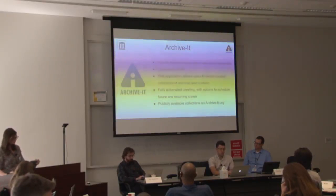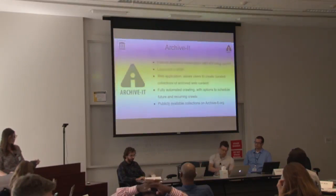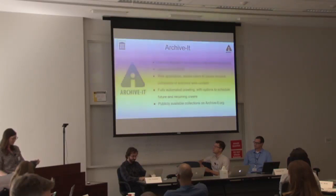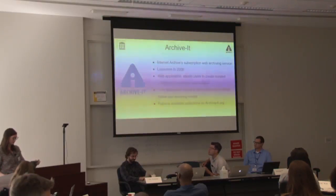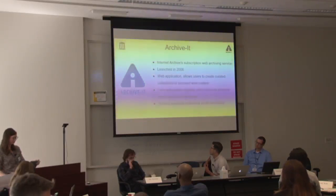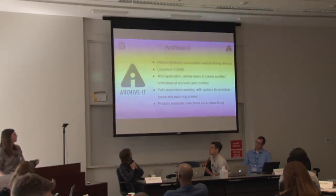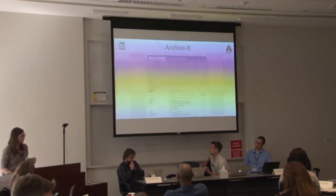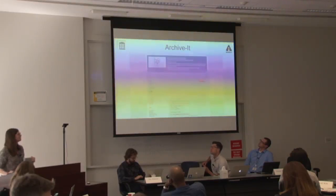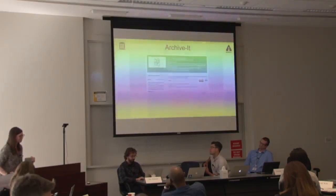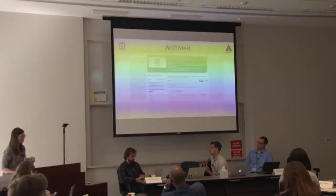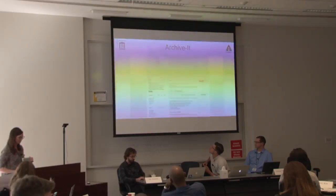Archive-It is the subscription web archiving service from the Internet Archive, first launched in 2006 — we're celebrating our 10-year anniversary this year. The Archive-It web application allows users to add and crawl URLs and create curated collections of archived websites. Users can crawl on demand or set up scheduled and recurring crawls. This is what we used to build event-based collections. Users have the option of making their collections publicly available. Here's an example from the International Internet Preservation Consortium — they collect Olympics content every two years, winter and summer. This is from 2012; you can see their Twitter content URLs and lots of metadata added for easy browsing.